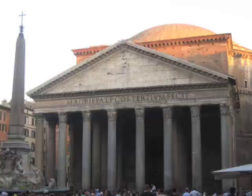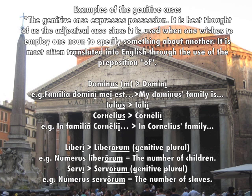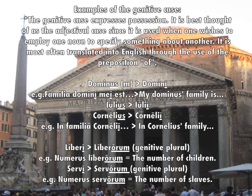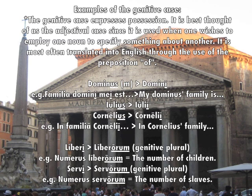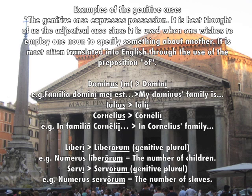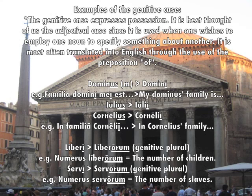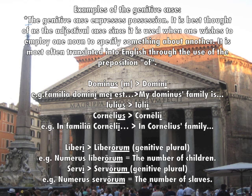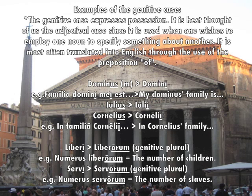Examples of the genitive case. The genitive case in Latin expresses possession. It is best thought of as the adjectival case since it is used when one wishes to employ one noun to specify something about another. It is most often translated into English through the use of the preposition 'of.' In the dialogue, dominus became domini, so familia domini mei est would mean 'my master's family is.' Julius became Iulii and Cornelius became Cornelii — in familia Cornelii means 'in Cornelius's family.'